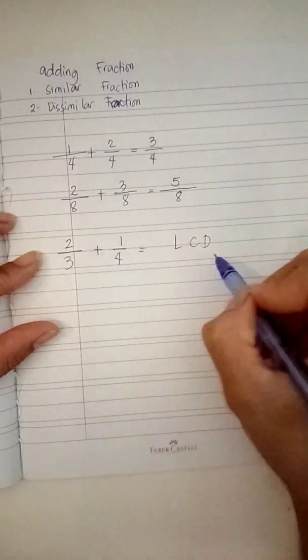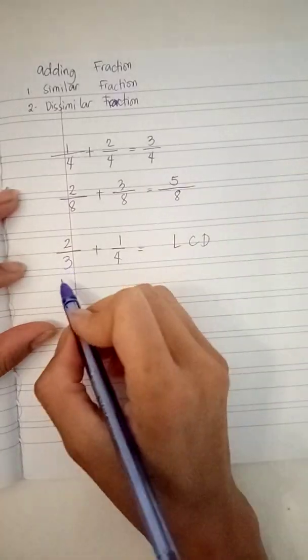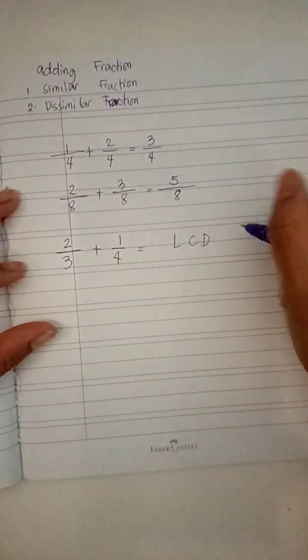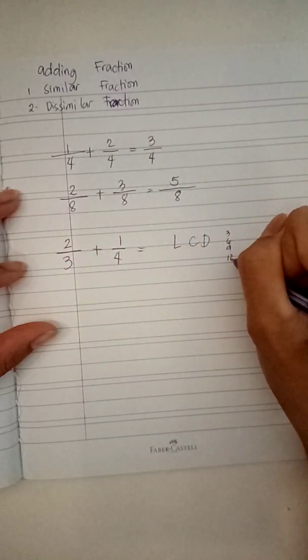The process of this is just to have to find the multiples of the denominator. For example, the three: three, six, nine, twelve.